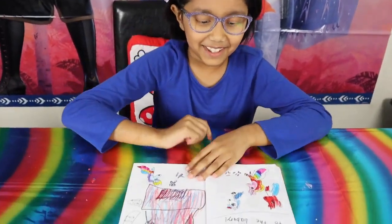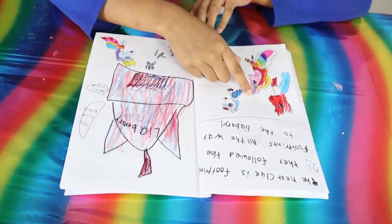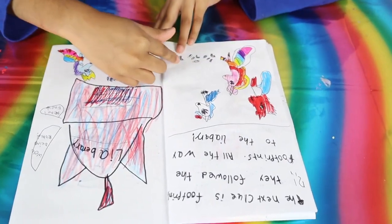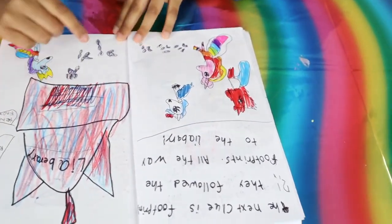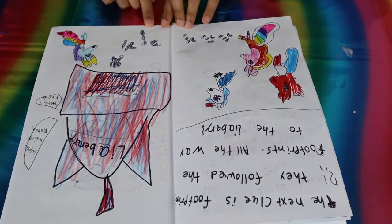I don't know why she's like, she's like crazy. And Rainbow is like pointing to the footprints.